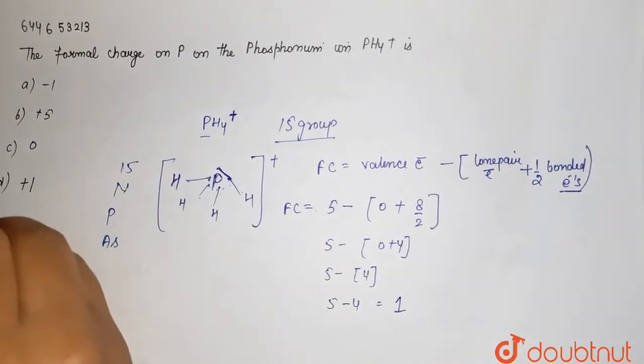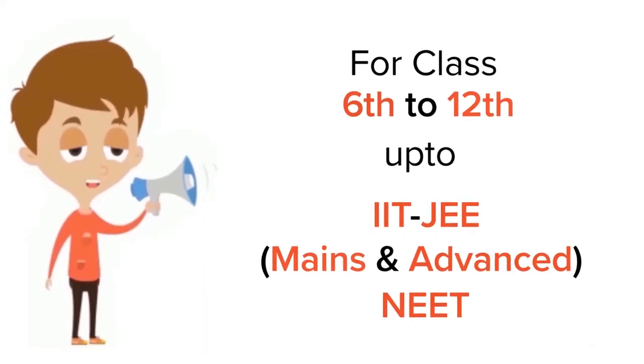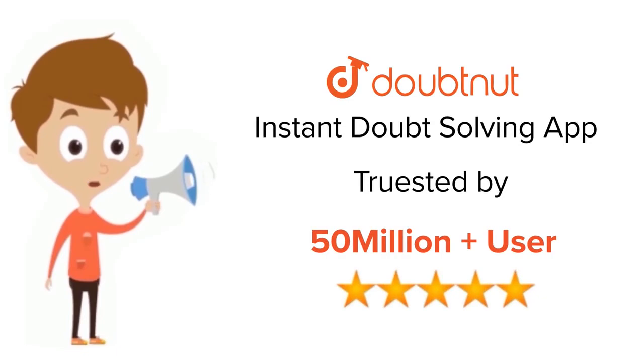So your option D will be the right answer. For class 6 to 12, IIT JEE and NEET level, trusted by more than 5 crore students, download Doubtnet app today.